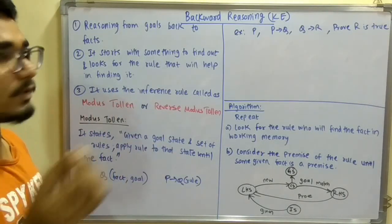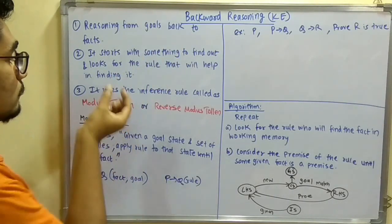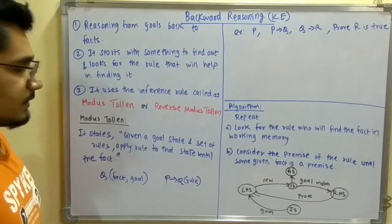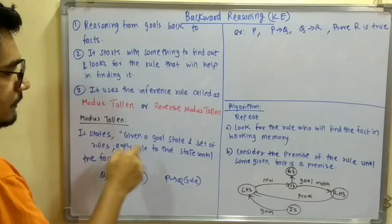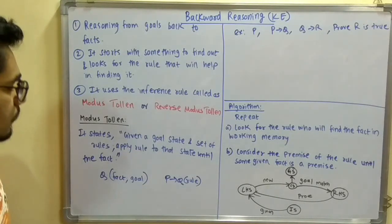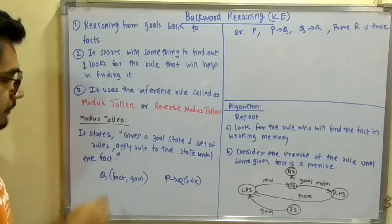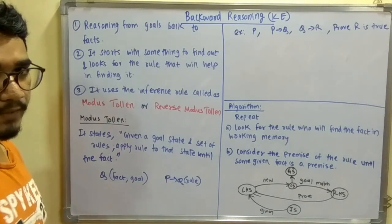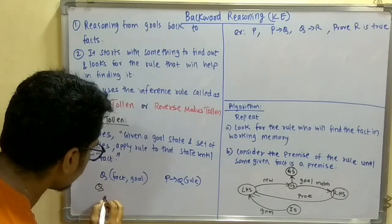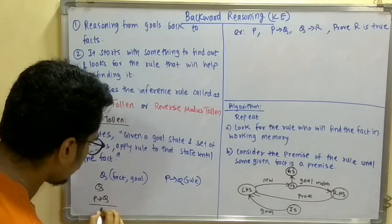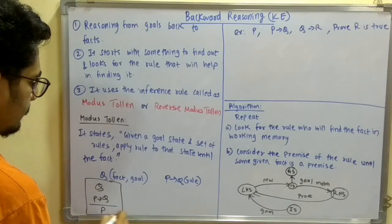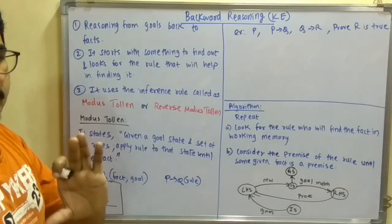The inference rule used for backward chaining is called Modus Tollens, or reverse Modus Tollens. What Modus Tollens states is: given a goal state and a set of rules, apply the rules to the goal state until you have reached a fact or until the fact is found. So if you have goal Q and rule P derives Q, then by Modus Tollens you can prove P.